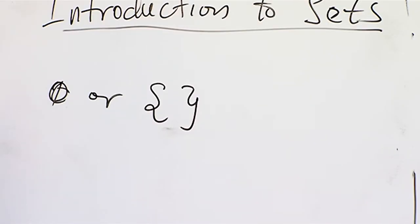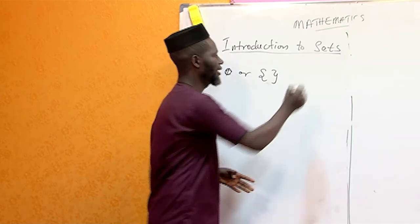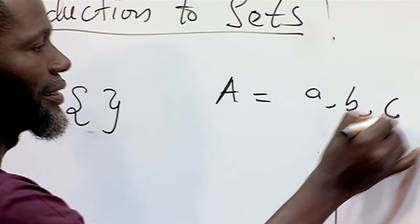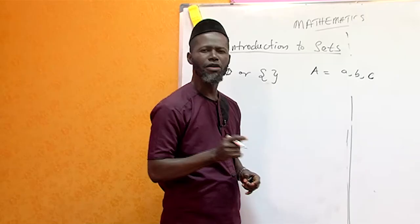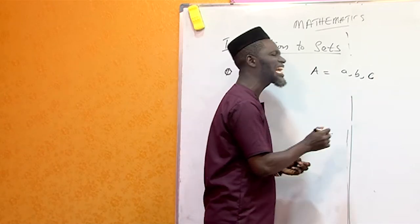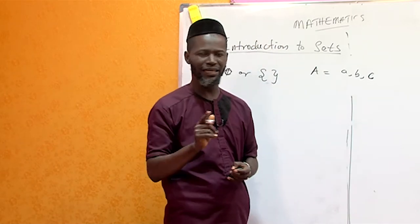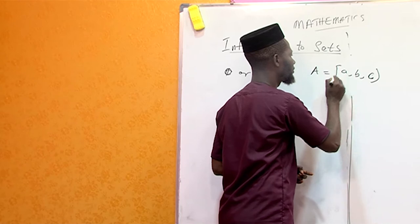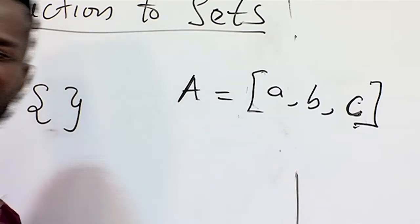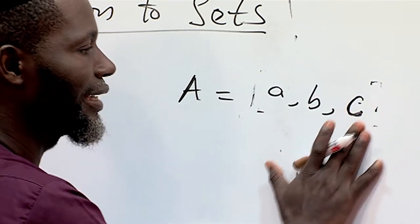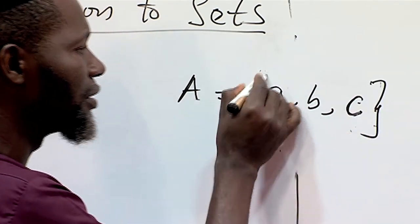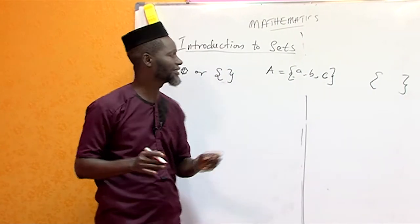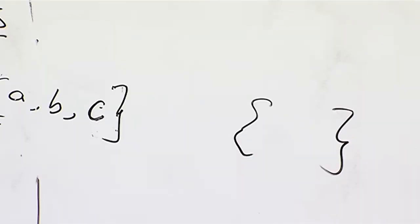Before we proceed to the empty set, there is something I want you to know about sets. We have elements of a set. Let's say we have set A equal to {A, B, C}. Now, A, B, C — because you call it a set — must be enclosed with a curly bracket. If you use a round bracket, you miss it; it's not a set. If you use a square bracket, you miss it; it's not a set. But you must use a curly bracket.